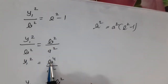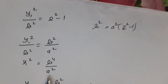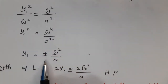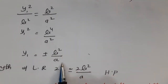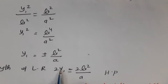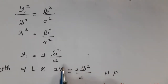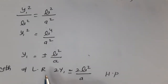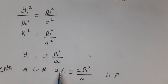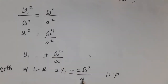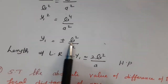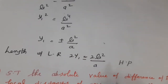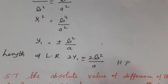y₁² = b⁴/a², so y₁ = ±b²/a. Since the length is always a positive value, the length of the latus rectum is 2y₁ = 2b²/a. Hence the result is proved: the length of the latus rectum equals 2b²/a.